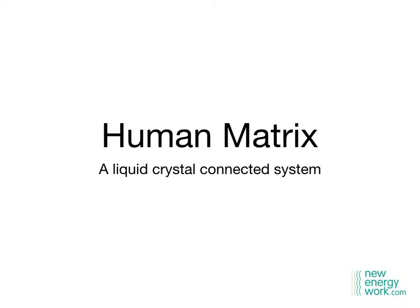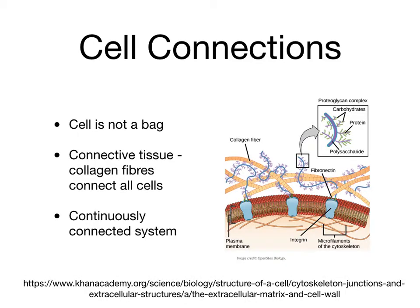Now let's think about the human matrix. The human matrix is a liquid crystal connected system, meaning that the cells are connected together. The old idea of the cell being an isolated entity has been changed by recent research — cells are part of a connective tissue system. Collagen fibres connect all the cells of the body through a web work of connection, creating a continuously connected system through which information can flow.